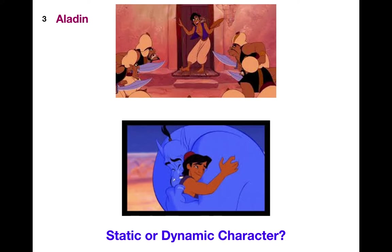Number 3 — Aladdin. Is Aladdin a static or a dynamic character? At the beginning of the story, Aladdin is a thief — he only cares about himself. By the end of the story, he could have wished for something for himself, but instead he sets the genie free and thinks of others. Does Aladdin stay the same or does he change? Aladdin changes a lot — selfish at first but selfless by the end — making him a dynamic character.